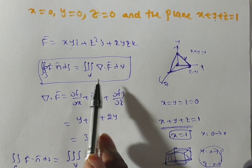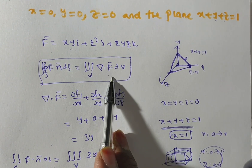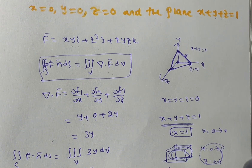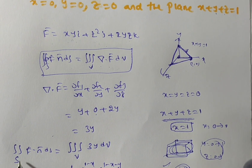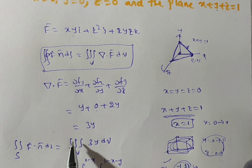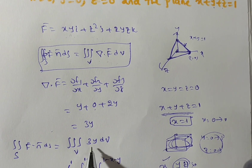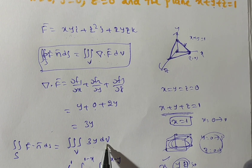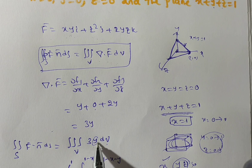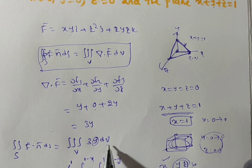Substituting into the formula, the double integral over S of f̄ · n̄ dS equals the triple integral over V of 3y dV. Since 3 is a constant, we take it outside: 3 times the triple integral of y dV. We can write dV as dx dy dz, so we need to evaluate this volume integral and find the limits of x, y, z.